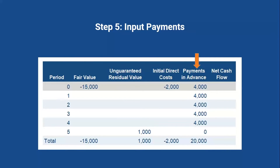Our next step is the actual payments themselves. This was a five-year lease with $4,000 payments made in advance at the beginning of each year. Those are positive cash flows for the lessor because they're going to be receiving those payments in advance, starting in period zero since the first payment and all other payments are made at the beginning of the year. We don't have a payment happening at the end of the lease, so there's a zero in period five, indicating that we have made those five payments in advance for all the other years.